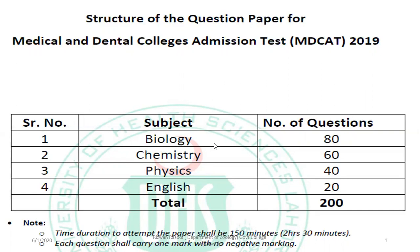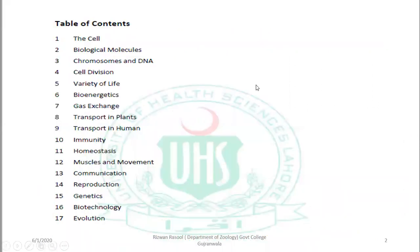As you can see in this slide, there are a total of 80 MCQs in biology, 60 in chemistry, 40 in physics, and 20 in English. In these lectures, I will try to cover the biology portion so that you can prepare easily and have no issues with biology preparation.